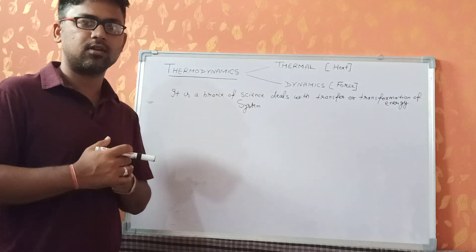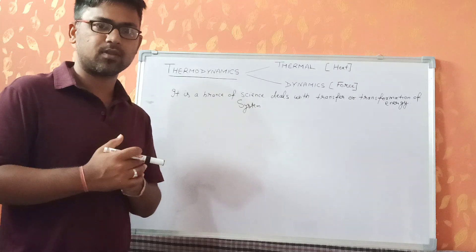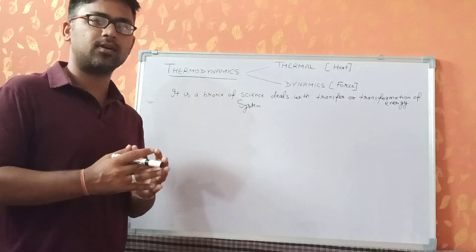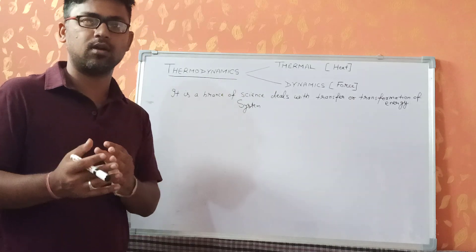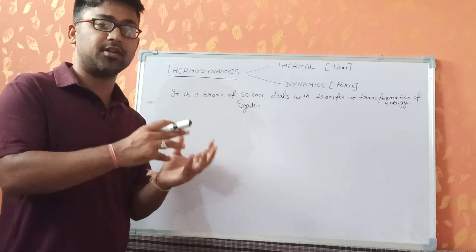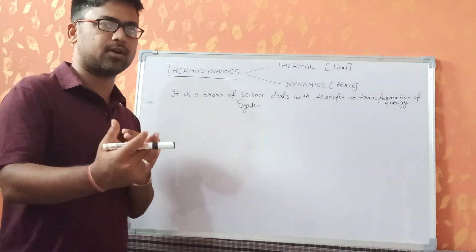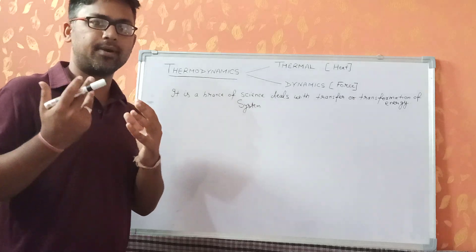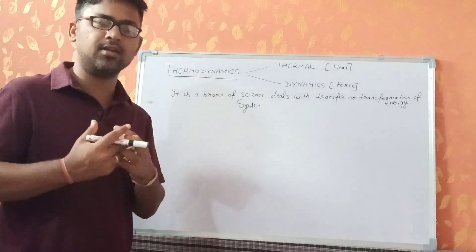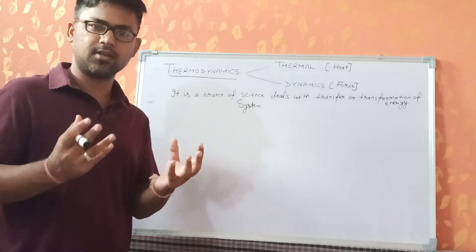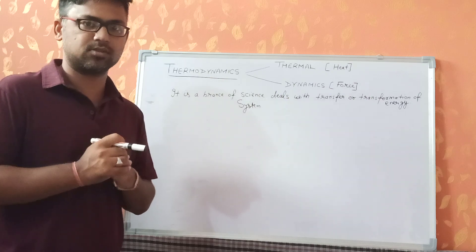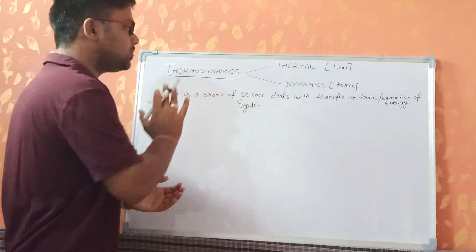When we convert mechanical energy into heat energy, there are some constraints. For example, when you apply brakes, kinetic energy is converted into heat energy entirely. But to reverse that — from heat energy back to kinetic or mechanical energy — it is not 100% possible, even under ideal conditions. So all processes in nature occur under some directional constraints, and the study of these processes comes under thermodynamics.